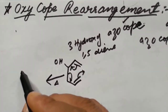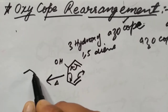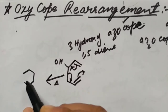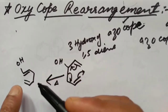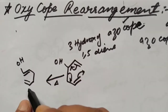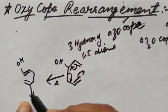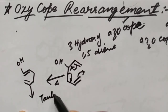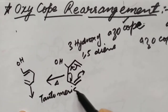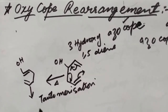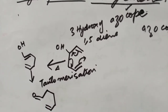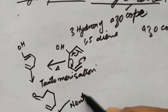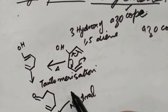We get this compound, which undergoes tautomerization and we get the final product. This is a neutral rearrangement.